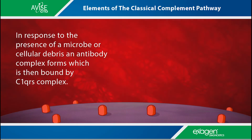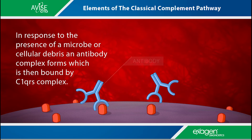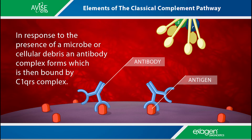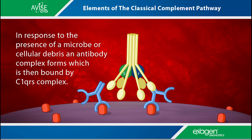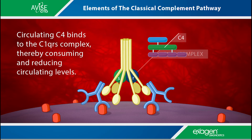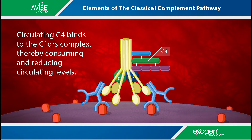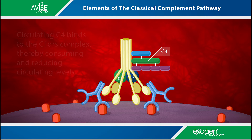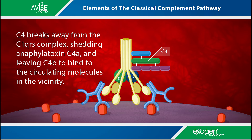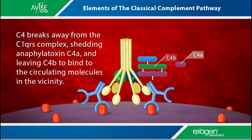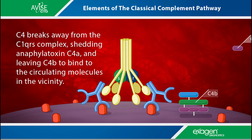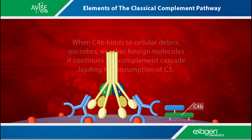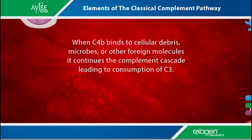In response to the presence of a microbe or cellular debris, an antibody complex forms which is then bound by the C1QRS complex. Then circulating C4 binds to the C1QRS complex, thereby consuming and reducing circulating levels. C4 breaks away from the C1QRS complex, shedding anaphylatoxin C4A.